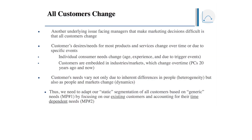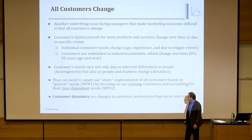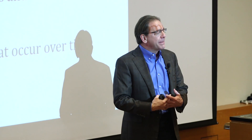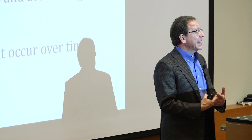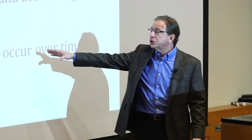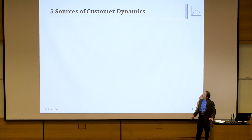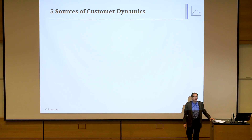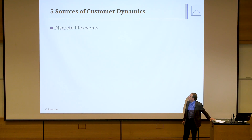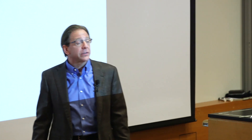Thus, we need to adapt our STP analysis — which we did for the whole market — to focus on just our existing customers to understand how their needs change over time. Managing customer dynamics is how we deal with the idea that all customers change. We define customer dynamics as all changes in preferences that occur over time, and there can be many sources. We're going to look at five different sources. The first is discrete life events — you get married, life changes; you have children.